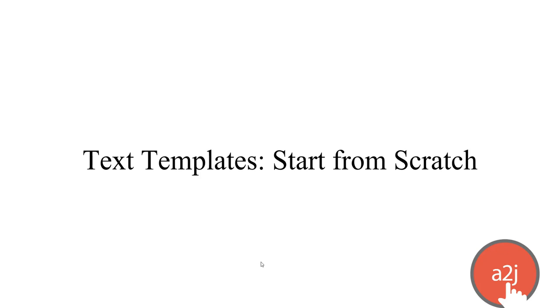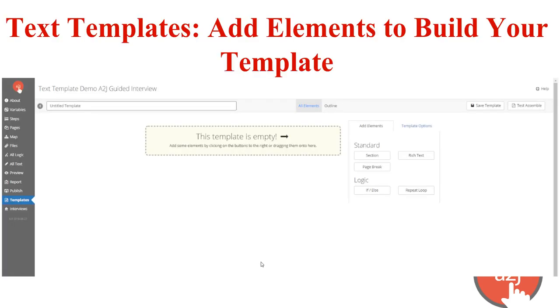The first type we'll talk about today are text templates. They're basically starting from scratch. If you think about a Google Doc — it's blank when you start and you add elements to create the ultimate document — that's similar to our text template. When you click 'create text template,' this screen opens up within your A2J guided interview and you're able to start adding elements to build the completed document.